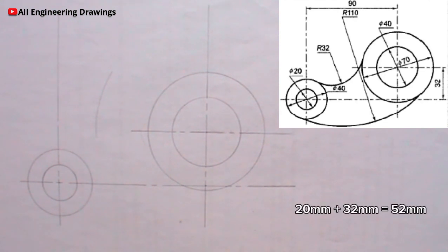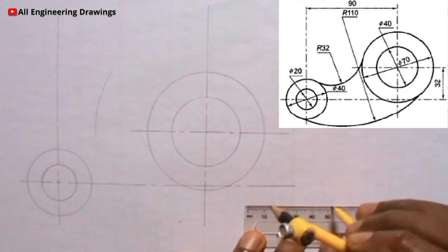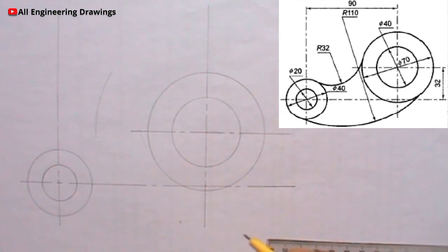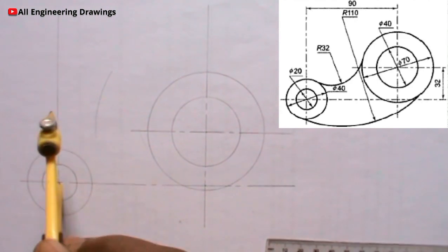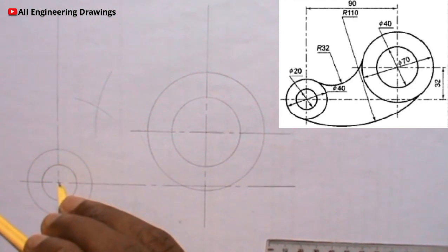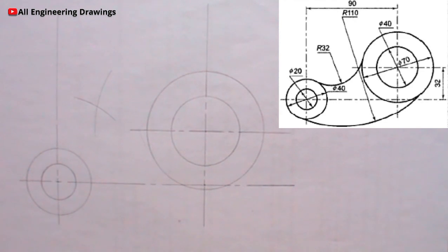At this side I will add 20mm, which is the radius of this circle, and 32mm which is the radius of the arc I am about to produce, so that will give me 52mm. I will adjust my compass to a radius of 52mm, then I will place my compass on the centre of the circle and cut my arc. The point where the arcs intersect is the center of the tangential arc. So I will adjust my compass to the radius of the tangential arc, which is 32mm, then I can now produce the tangential arc.